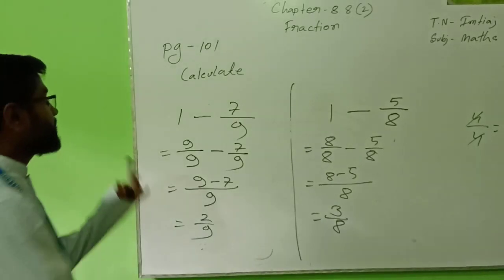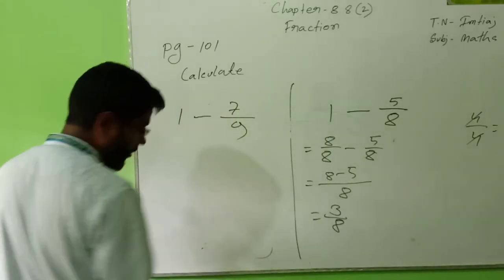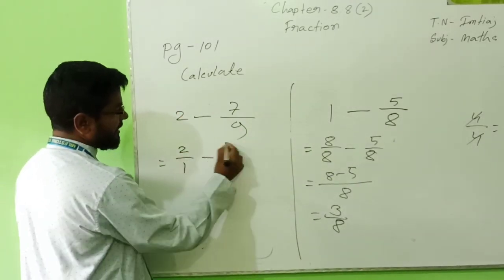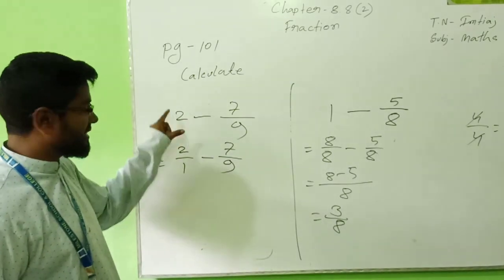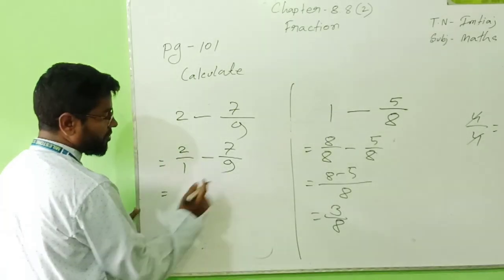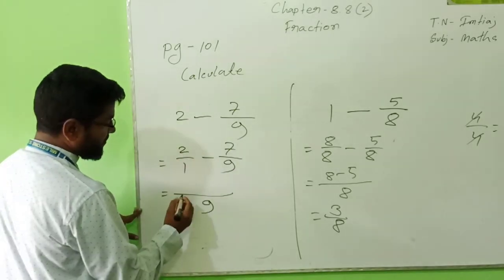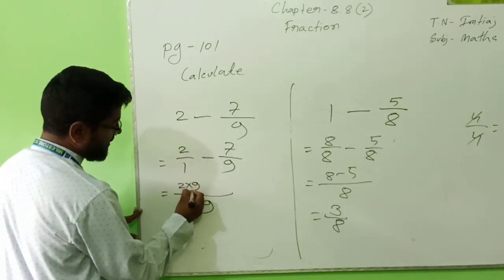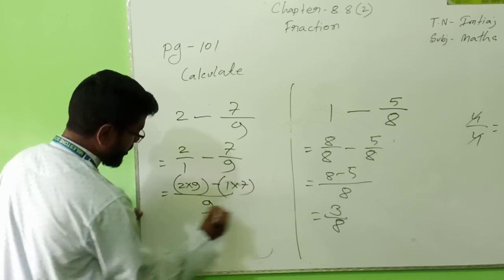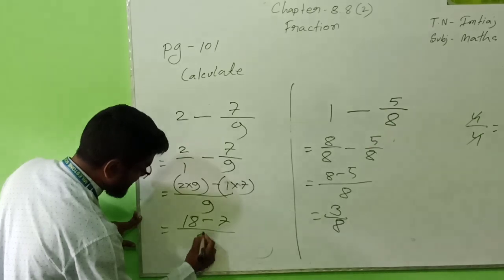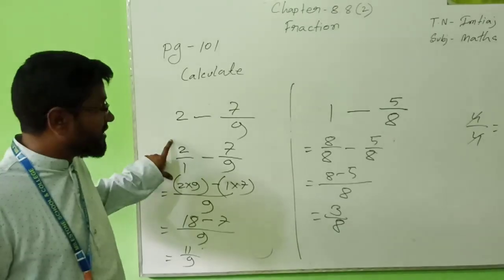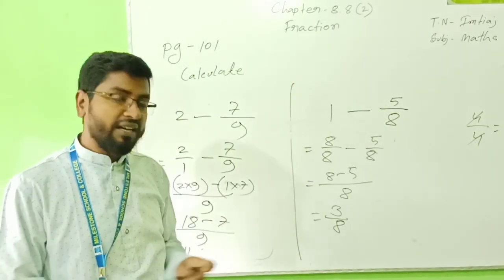But keep it in your mind: if we subtract any number from not 1, like 2, that time we must do it like this way. Otherwise the answer will not match. We will not write 9/9. There is 2. So this is the way. For that reason I wrote like this way. So both LCM is 9. So 9 divided by 1 is 9, 2 into 9 is 18. Minus 1 into 7 is 7. What will be here? 18 minus 7 by 9. Now it will be 11/9. Here it becomes 2, that is why I have done like this way. Here it becomes 1, that is why I have done like this way.